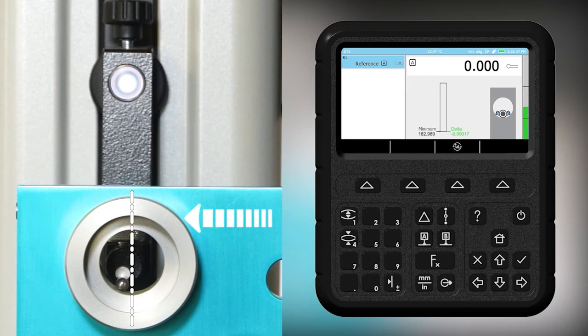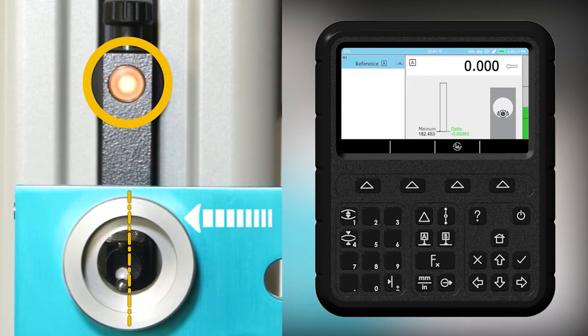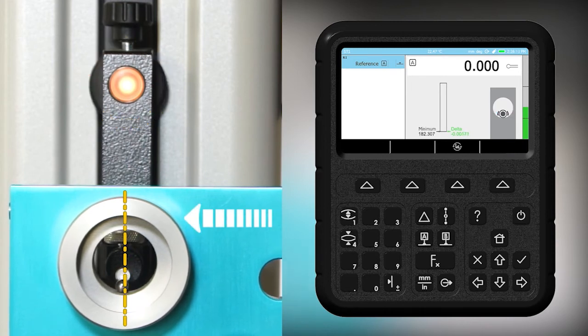As soon as the probe moves toward the minimum point, the LED becomes orange, meaning the motion direction is good and the probe is close to the culmination point.